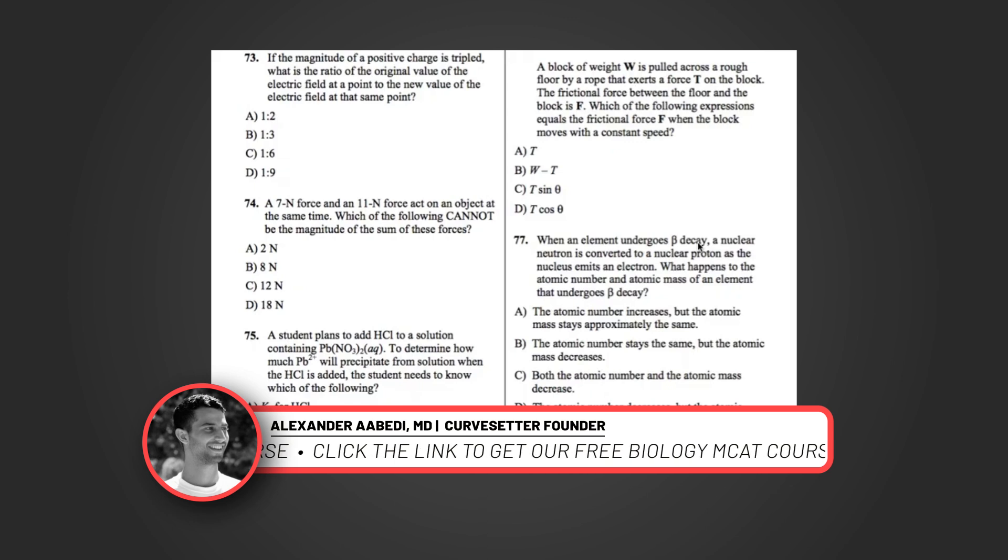In this case, we're going to use that equation kq over r squared. If it says we're at the same point, which is important in this problem, we're not changing r. k is obviously a constant, so the only thing that we're changing is q. And we're tripling it. So that new electric field is going to be three times as strong, so our answer is going to be B.